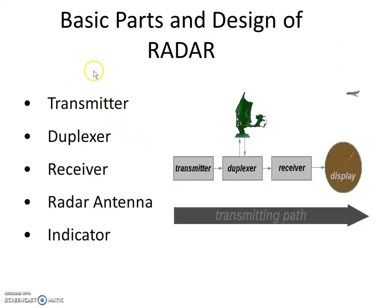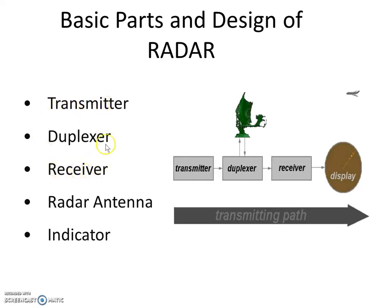The basic parts of a radar required for designing are transmitter, duplexer, receiver, radar antenna, and indicator. Radar antenna is common for both transmitting and receiving. Each part has a specific function.